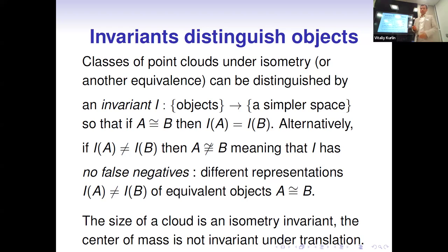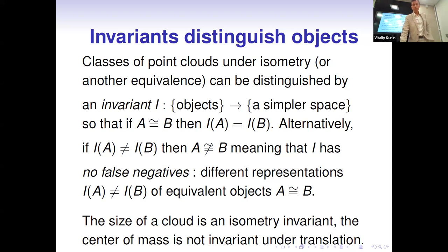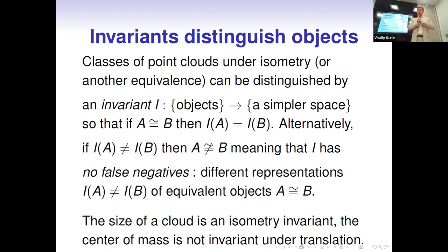An invariant must map two different representations of equivalent objects into the same value: I(A) should equal I(B). A simple invariant for molecules is the number of atoms — in one position we have three atoms, and any rigidly equivalent position also has three atoms. This is a very simple invariant, but useful: if two molecules have different numbers of atoms they cannot be rigidly equivalent. In the language of computer science, this invariant property means we have no false negatives.